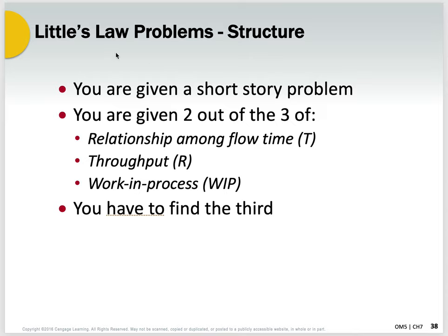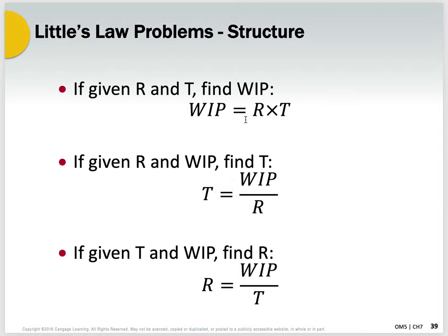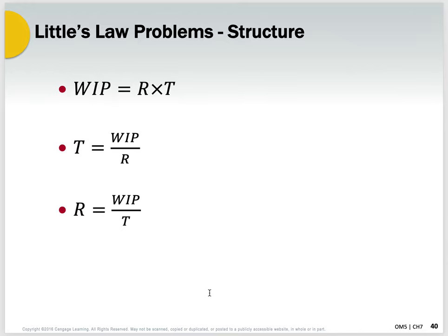Little's Law: work in process equals throughput times flow time — WIP = R × T. You can also solve for T: T = WIP ÷ R. Or solve for R: R = WIP ÷ T. Usually in these kinds of Little's Law problems you're given a short story problem with two of the three variables — WIP, R, and T — and you have to find the third. You'll use one of these three equations.